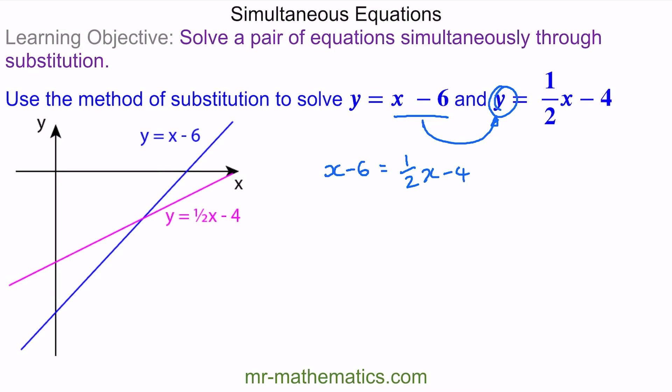To solve this equation, we're going to multiply everything by 2. Because when we do this, the half and the 2 will cancel to make 1. So now we have 2x minus 12 equals x minus 8. We can take away the x from this side, and then these will cancel. So x minus 12 will equal negative 8.